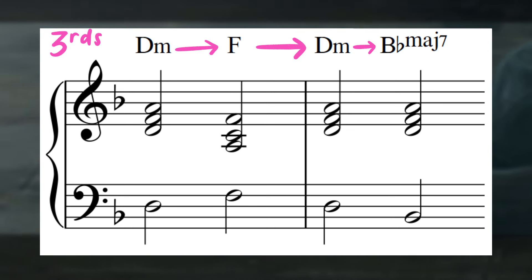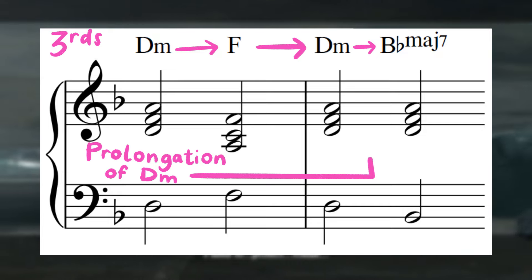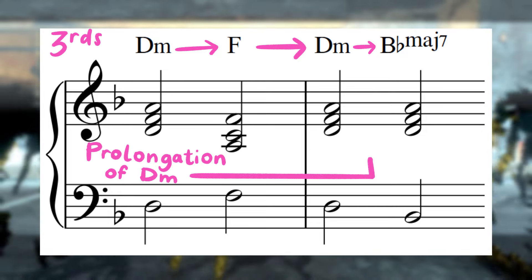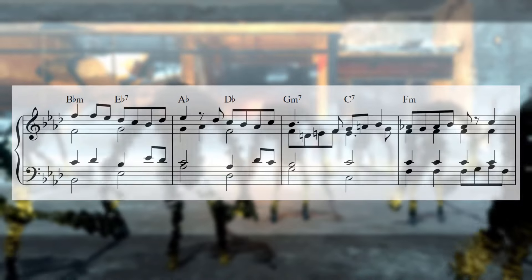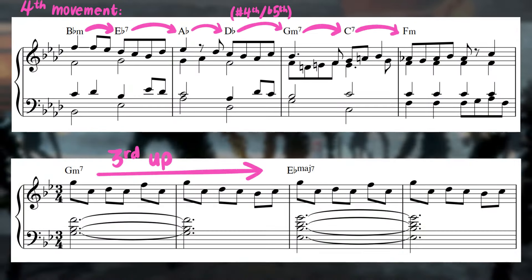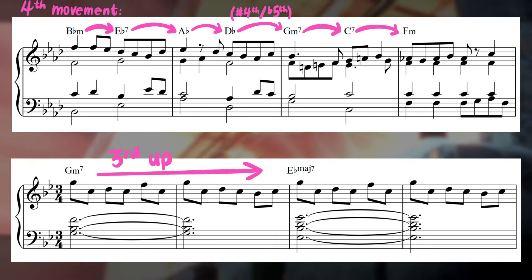In fact, moving between two chords a third apart from each other is generally seen as a prolongation of the first chord, not moving to a new harmonic sound so much as adding a new color to the original sound. Compare this section of Shadow Lord, that is entirely made up of fourth movement, to the track Kaine Salvation, which uses no fourth movement at all.